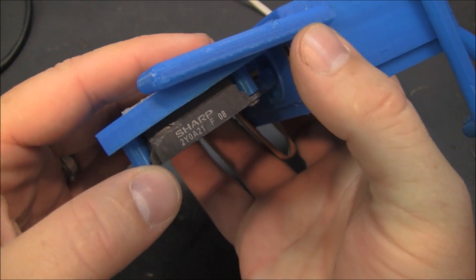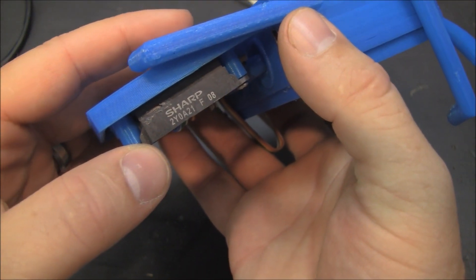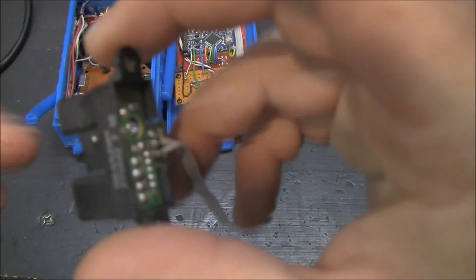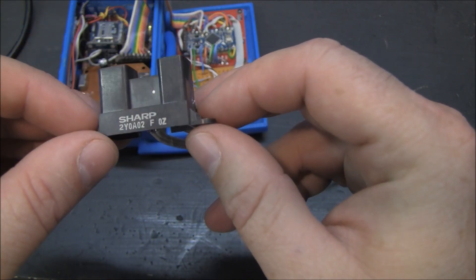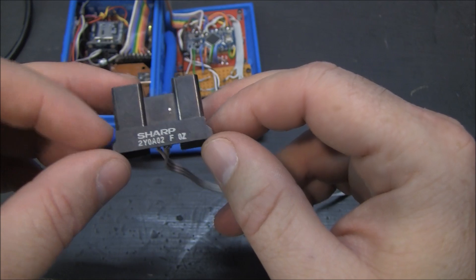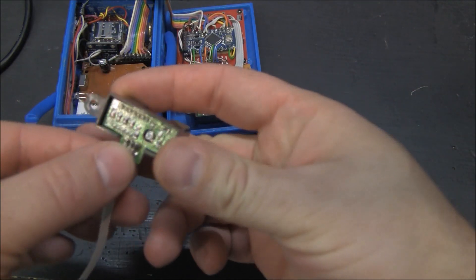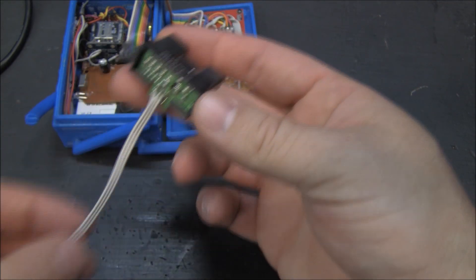But when it comes to the distance sensor, here, this is 2Y0A21. I think that's a little shorter range. Here's another one I've got. I forget, one of them goes three or four feet and one goes four, five or six feet. Just three wires: power, ground, and an analog output.